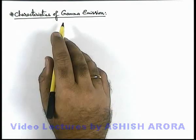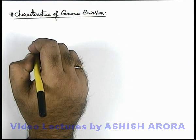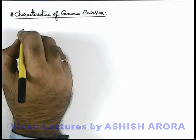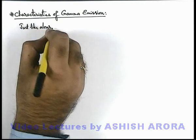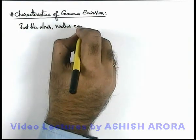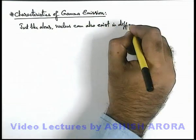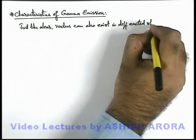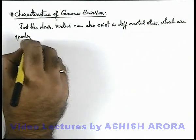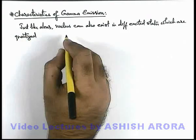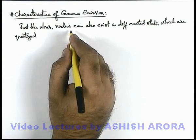Let us study about characteristics of gamma emission. To discuss gamma emission, let's first discuss some facts about nuclear energy levels. We already studied about atomic energy levels. Just like atoms, the nucleus can also exist in different excited states, which are quantized. That means there are some specific energy levels in which the nucleus can exist, and by supplying quantum energy it can also make transitions between different energy levels.